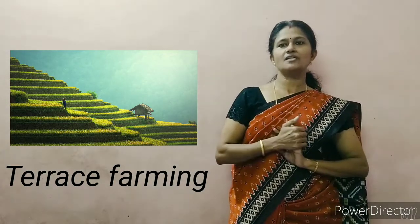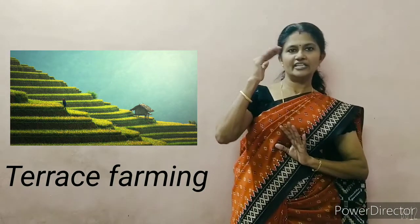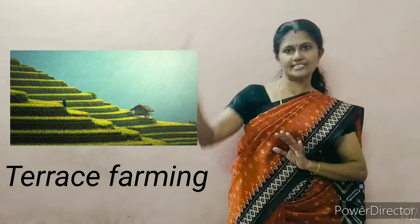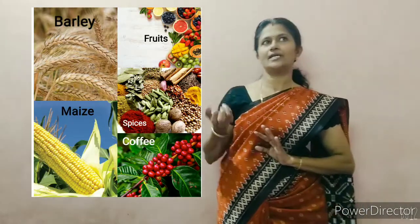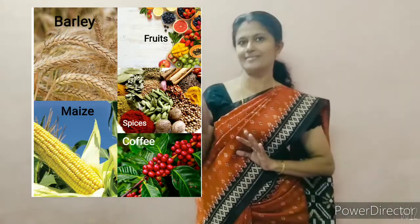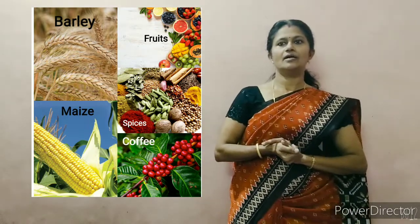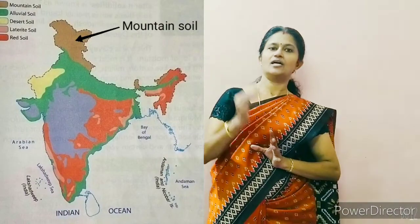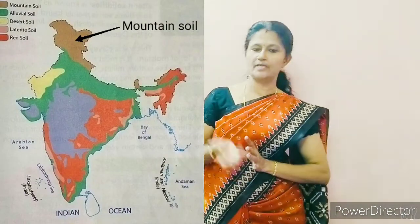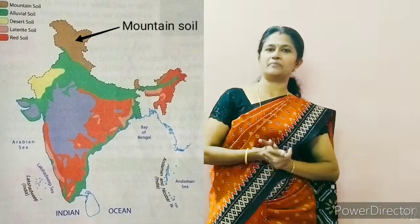Hilly slopes are divided into steps, then they cultivate crops like maize, barley, cotton, spices etc. This mountain soil is found in the areas of Uttarakhand, Jammu Kashmir, Himachal Pradesh etc.